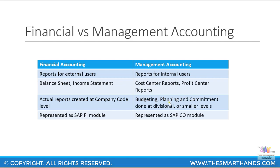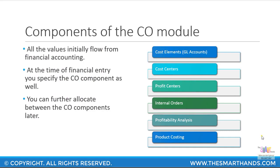In SAP, financial accounting is represented as the SAP FI module — FI stands for Financial Accounting. Management accounting is represented as the SAP CO module — CO stands for Controlling, also called management accounting. The primary components of the CO module consist of cost elements (also called GL accounts), cost centers, profit centers, internal orders, profitability analysis, and product costing.